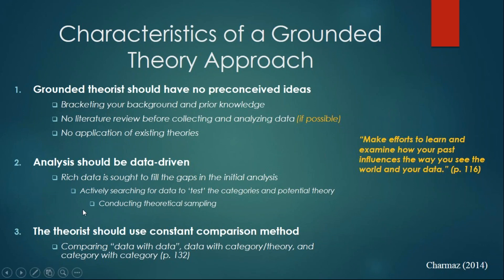The theory should use the constant comparison method. This means you are comparing data to data, one segment of data to another, comparing participant responses, and comparing the data to the categories you have developed. It's a back and forth, repetitive process — comparing and trying to find out whether that experience will help you come up with a theory or to adjust the existing theory you have developed.